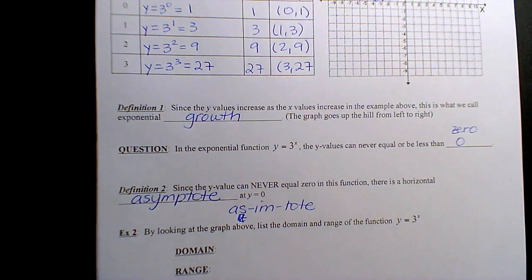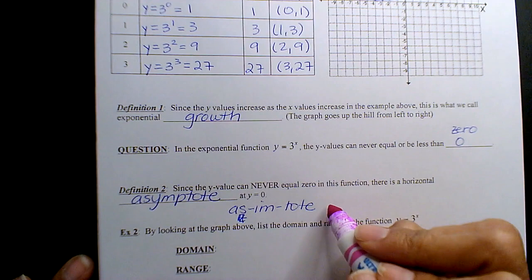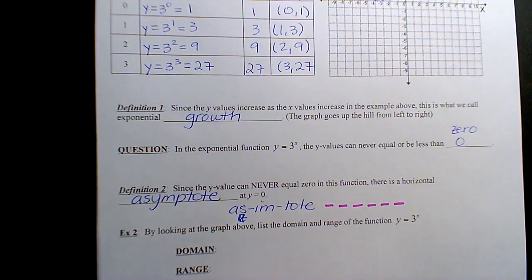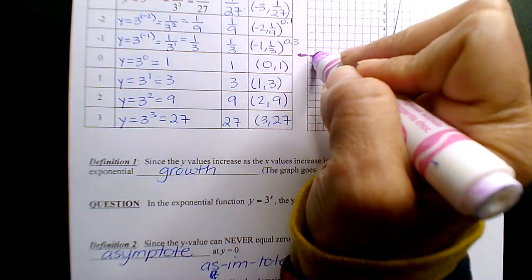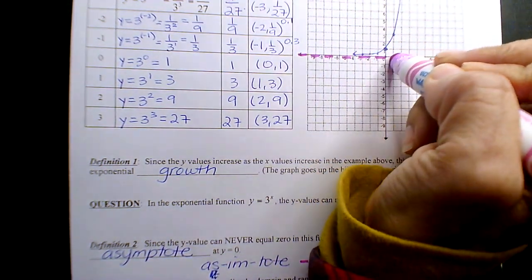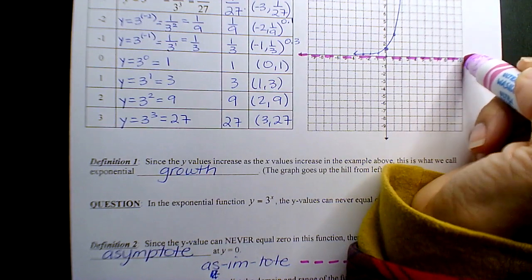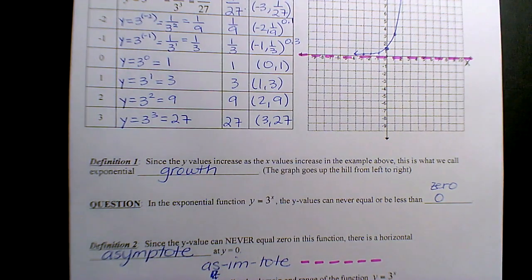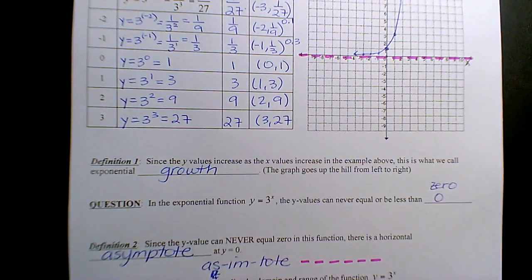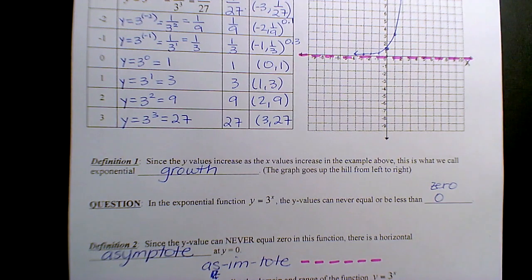So an asymptote - this is going to be a really long video - whenever you see it, it'll be a dash colored line. So like here, the asymptote is this line - y equals 3 to the x function will never cross y equals 0. It gets very close numerically, but it will never touch it, never reach it. That's an asymptote. That's because it's a restriction.